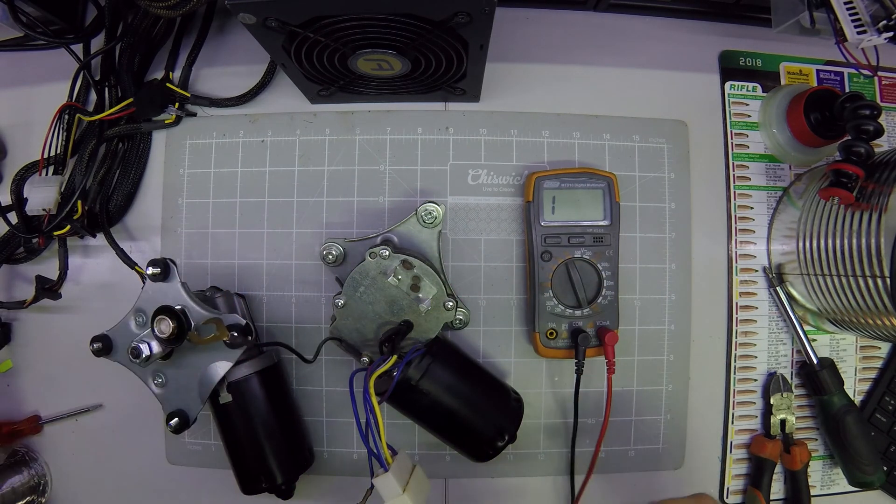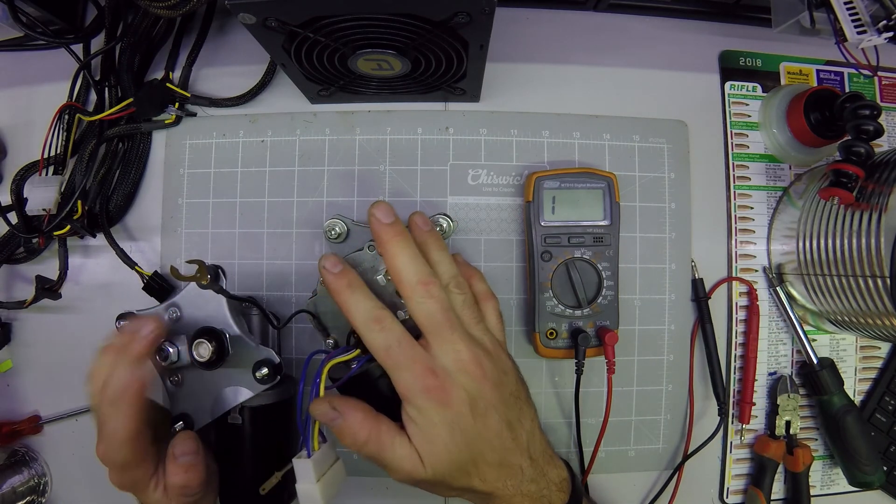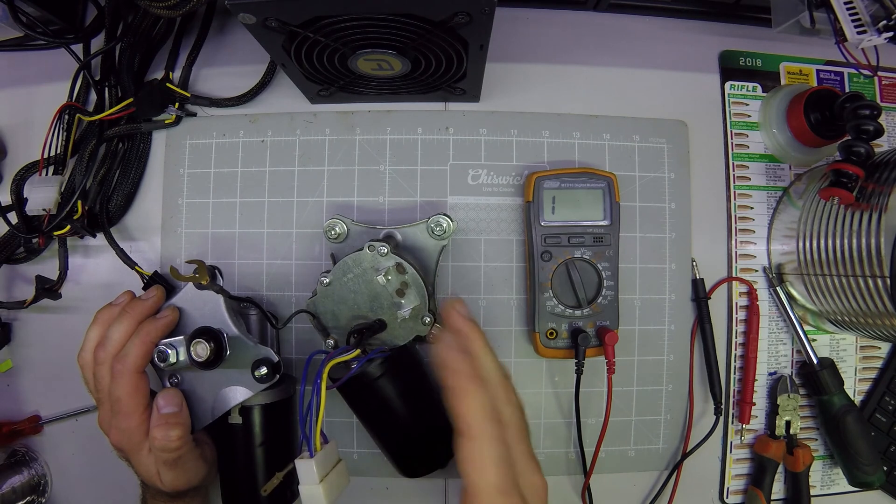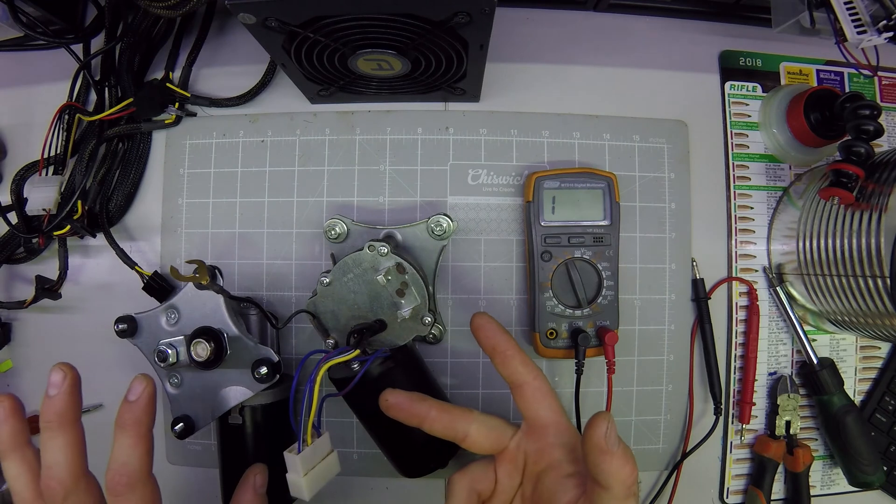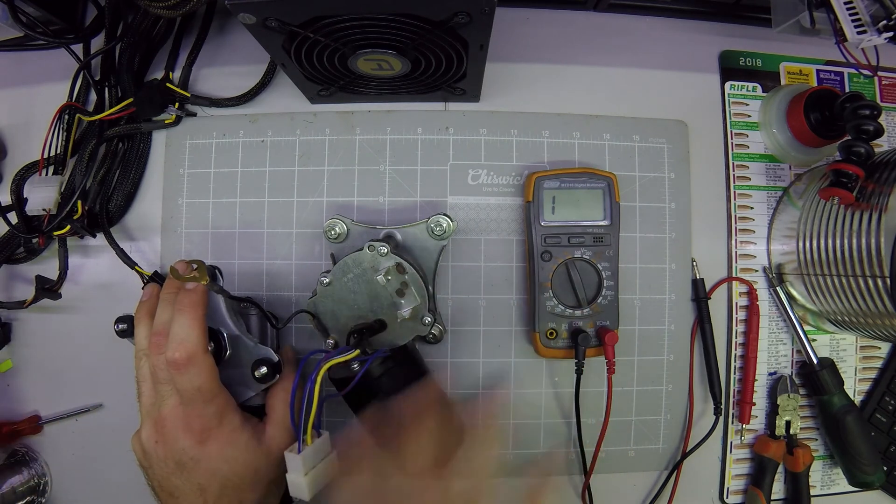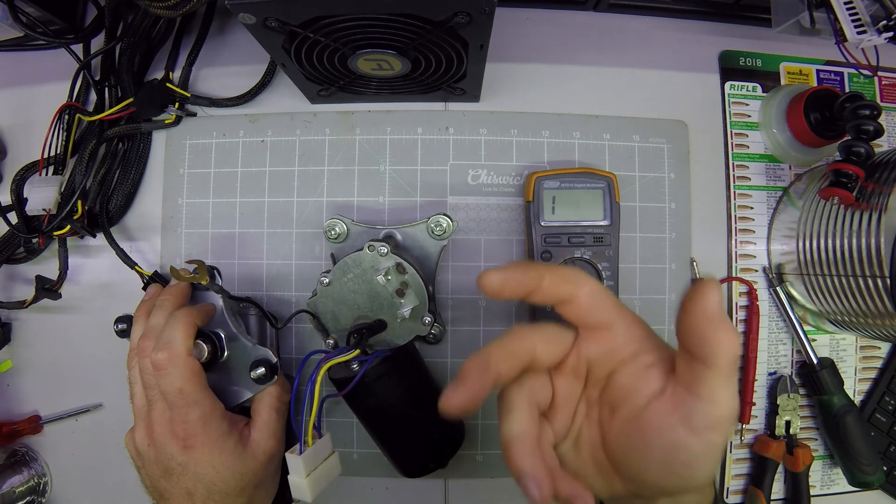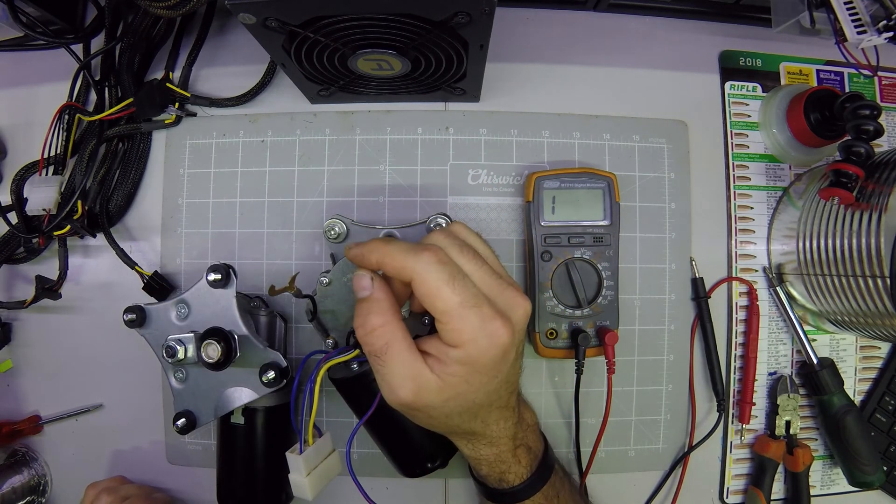What happens is if you have two motors on the same metal frame then their grounds become common too. Now if you reverse the polarity of this motor and this one is on the same common steel frame you'll burn out your controller. So there's a way to fix this and I'm going to show you how.